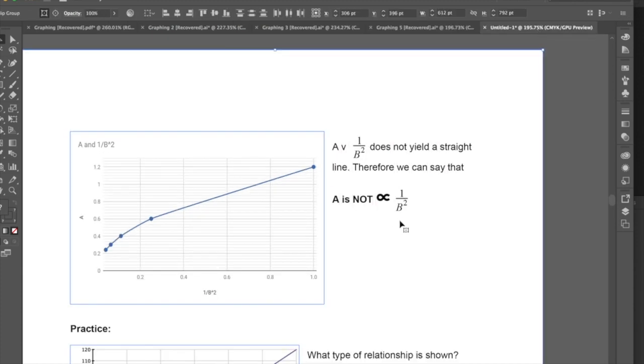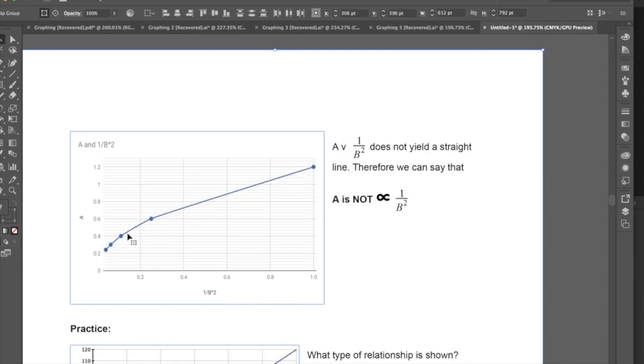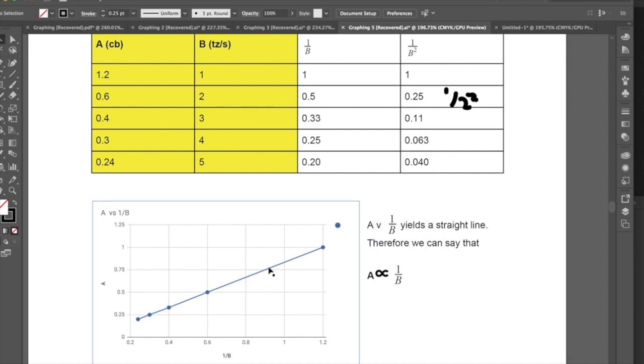However, if we have this graph here, which is a over 1 over b squared, taken from this data and graphed, so a versus 1 over b squared, we get a curved line. Now this curved line, it doesn't yield a straight direct proportion. So we cannot say that a is proportional to 1 over b squared. We can, however, say that because it yields a straight line when we graph a versus 1 over b, that a is directly proportional to 1 over b. So any other measurement or any other proportion we want to make from there, we can extrapolate the data of a, and we take it versus 1 over b, and we can find our value for a for any value of 1 over b.